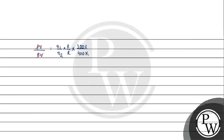Cancelling P and R, and dividing the two equations, we get n2 by n1 equals 300 by 400, which simplifies to 3 by 4. So n2 is three-fourths of n1.